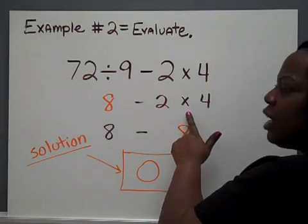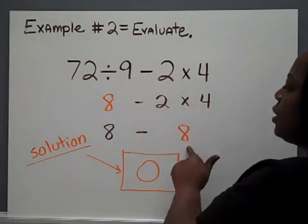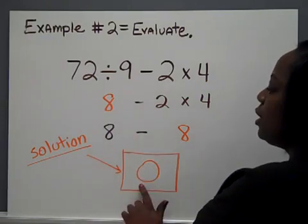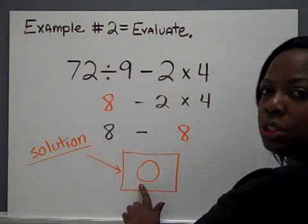We still have that multiplication left to deal with. 2 times 4 is 8, copy the rest of the problem, and you're left with 8 minus 8. And 0 will be your solution.